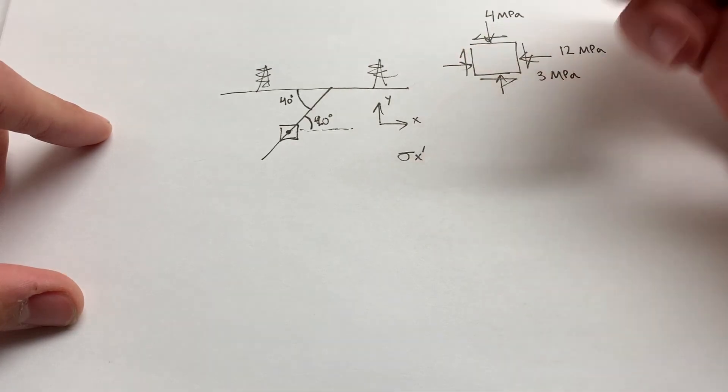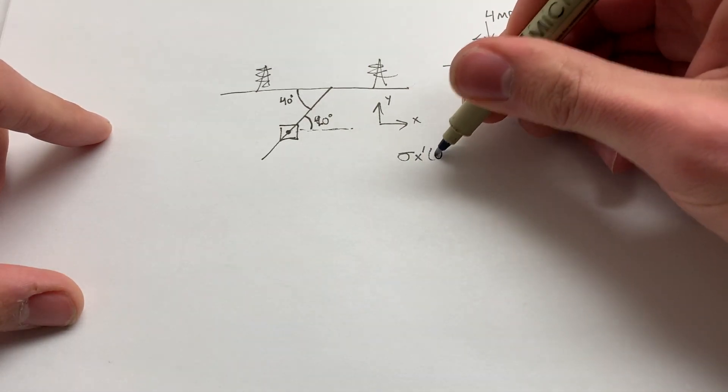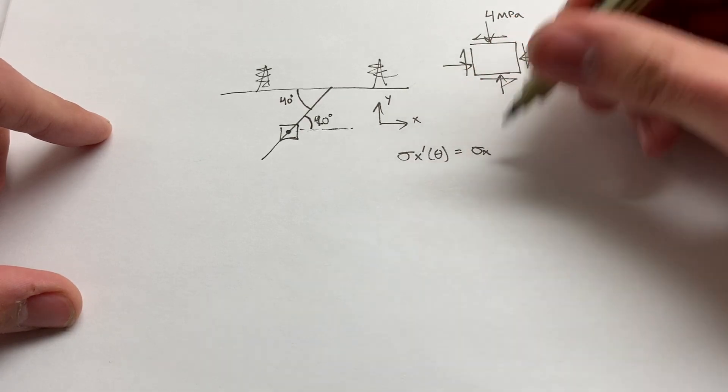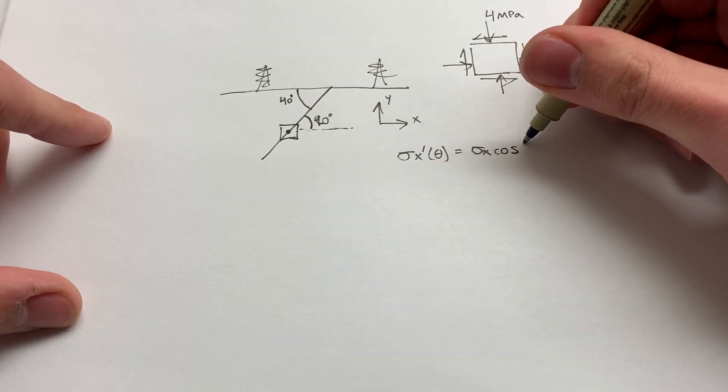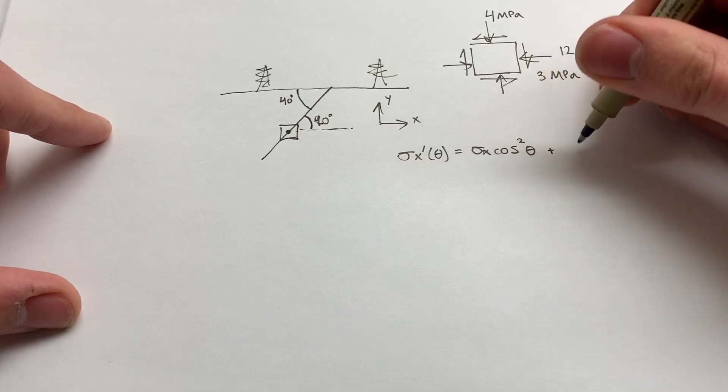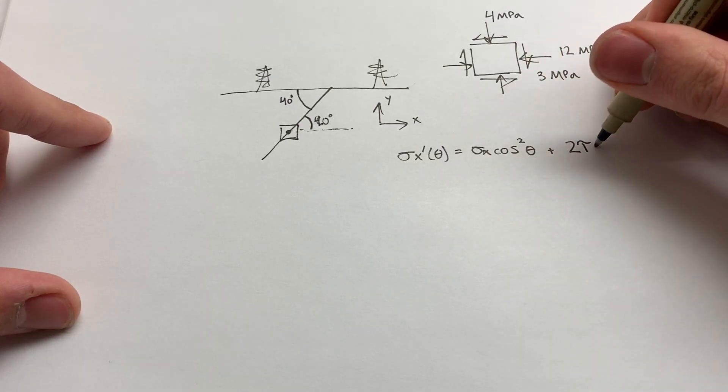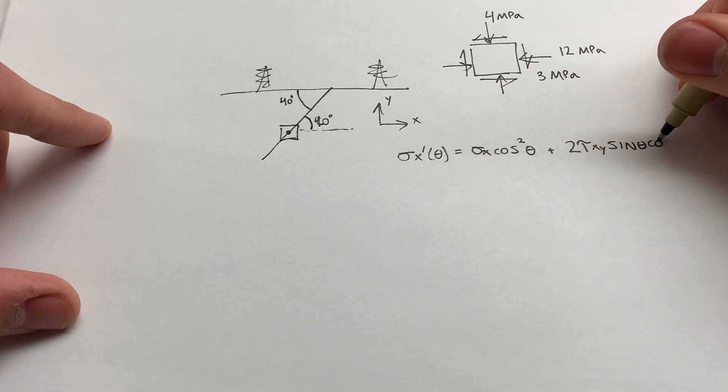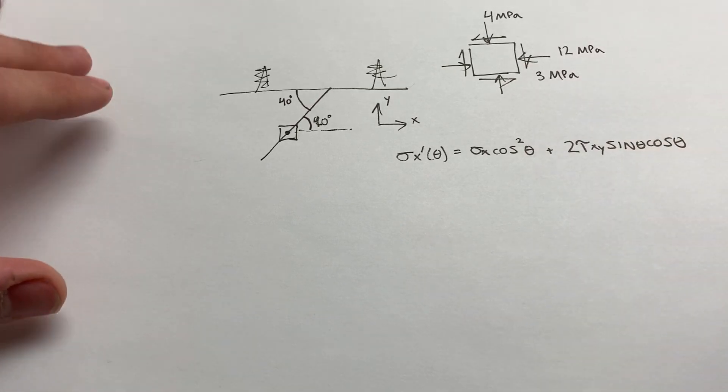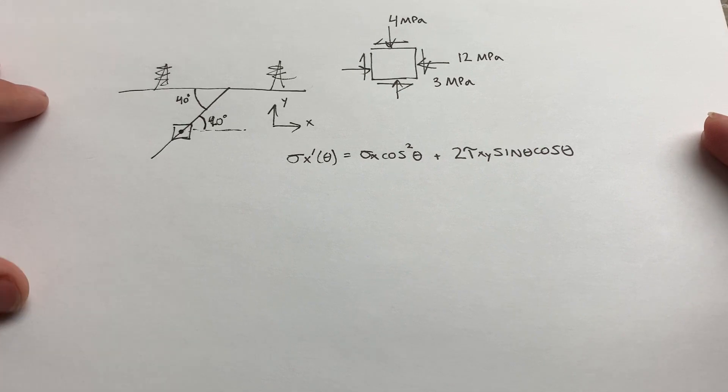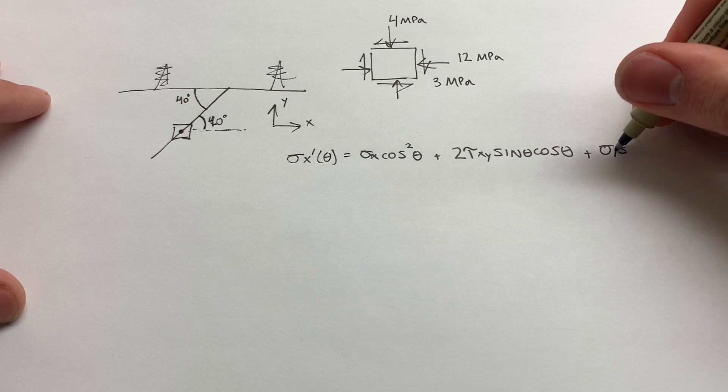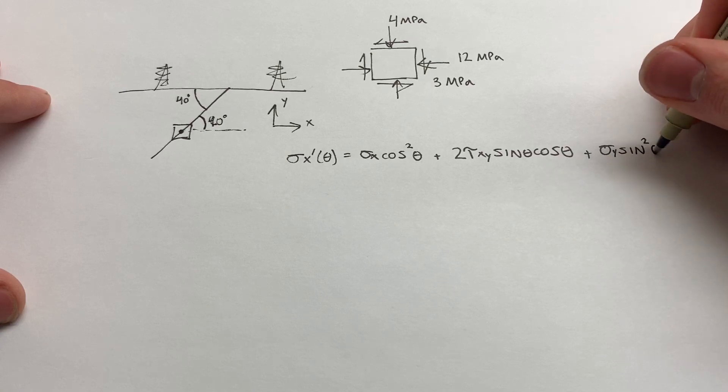Sigma X prime, which is the rotated sigma for some value theta. It's a function of theta. It's going to be equal to sigma X cosine squared theta plus 2 tau XY sine theta cosine theta. A little bit more space here.